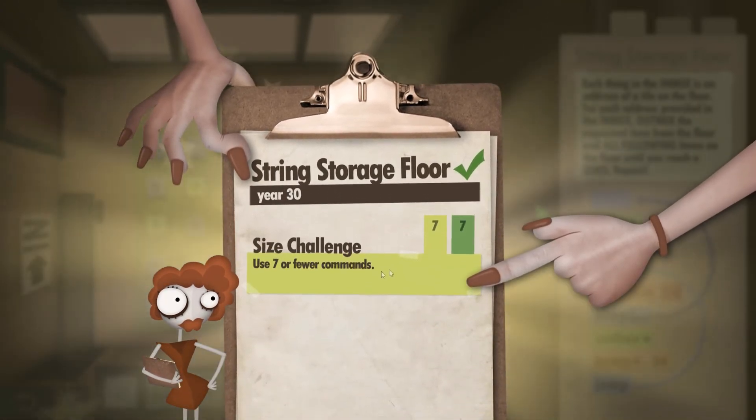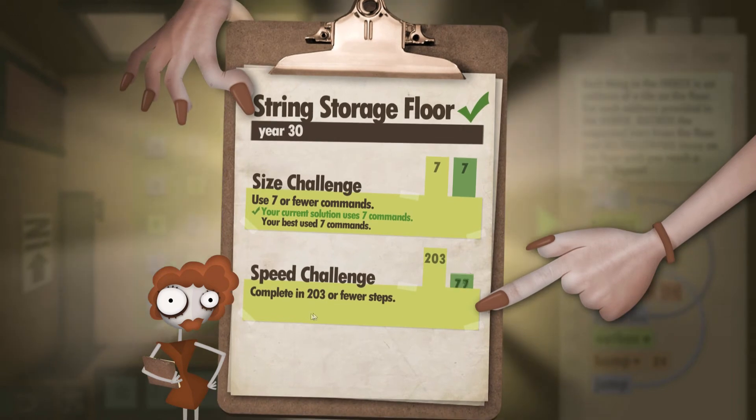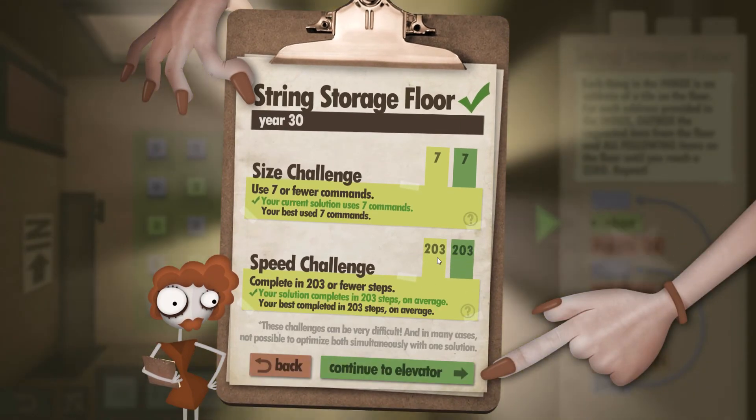So now we can see 7 or fewer commands, we did 7 out of 7. For the speed challenge we did exactly 203 out of 203.